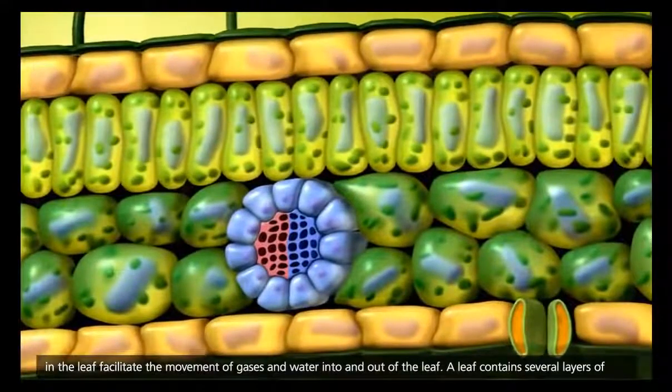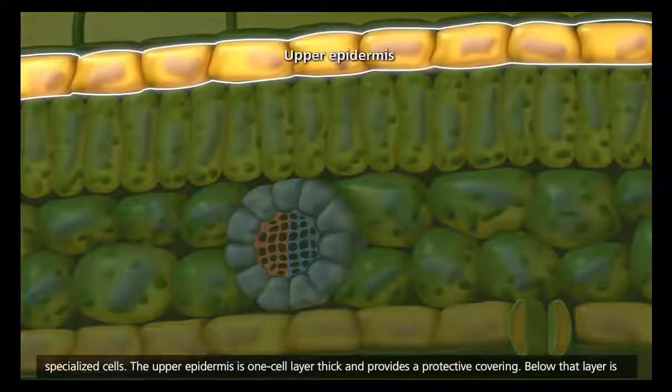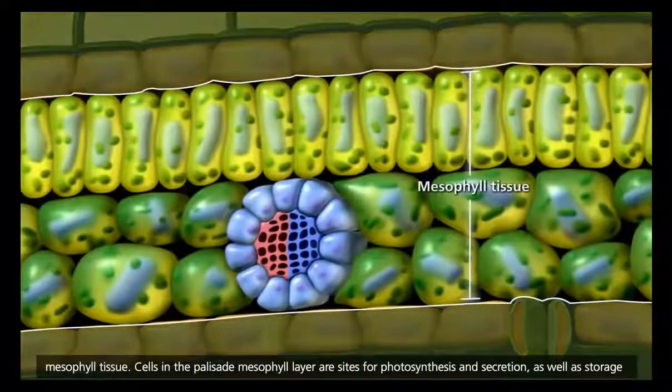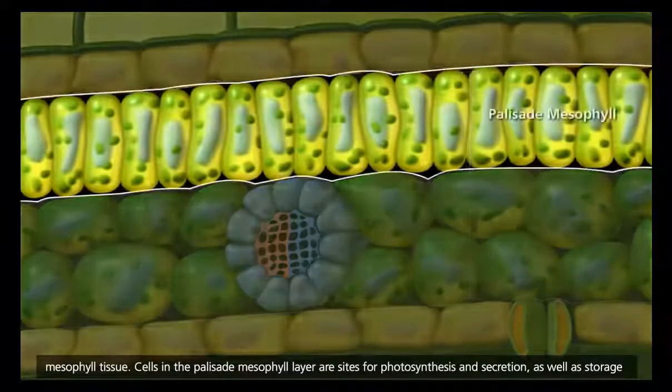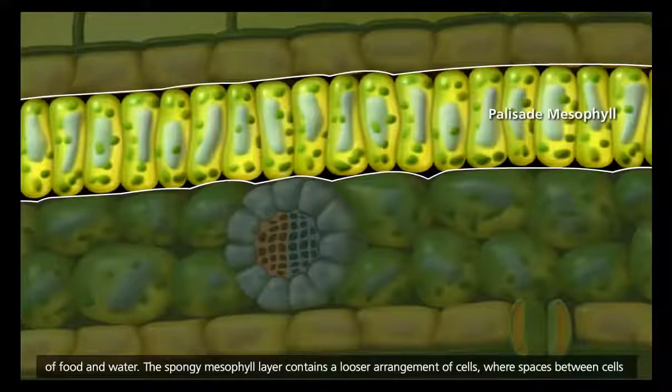A leaf contains several layers of specialized cells. The upper epidermis is one cell layer thick and provides a protective covering. Below that layer is mesophyll tissue. Cells in the palisade mesophyll layer are sites for photosynthesis and secretion, as well as storage of food and water.